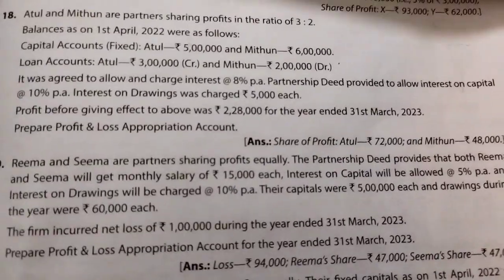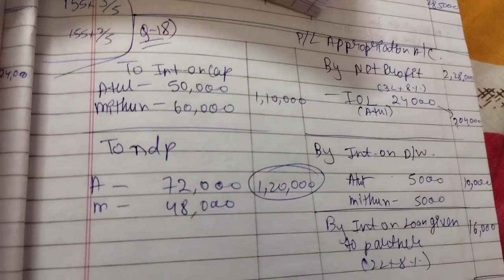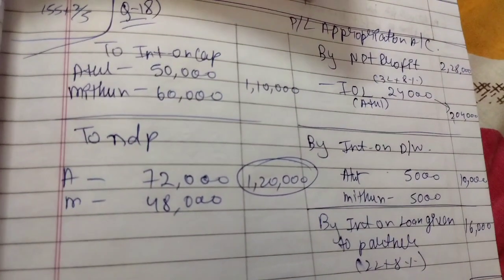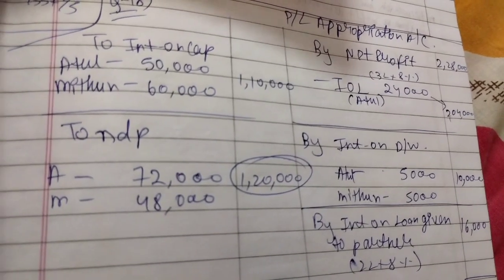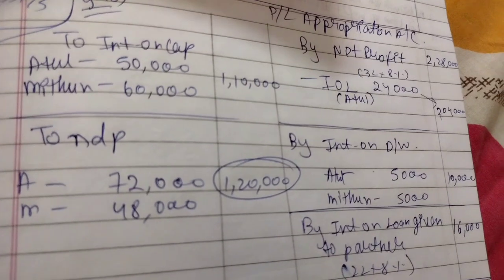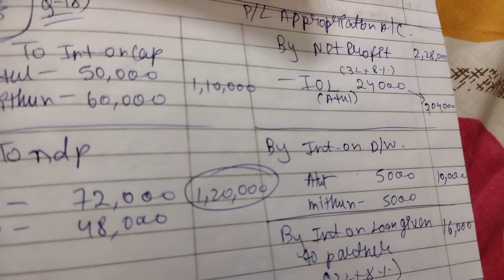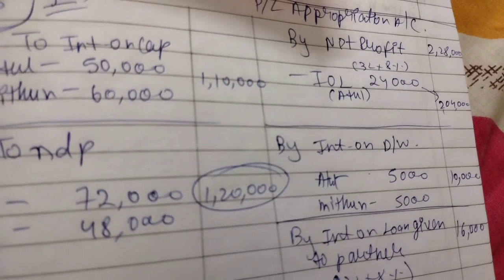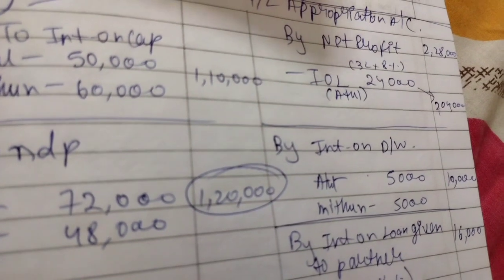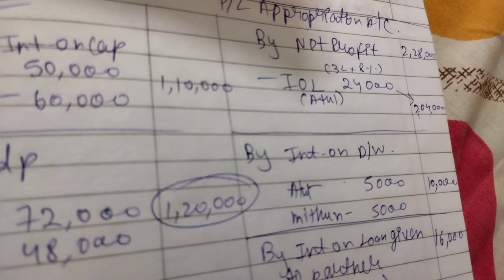We need to calculate interest on capital (IOC). The rate was 10%, so Atul's IOC is 50,000 and Midhun's is 60,000 — outer column total is 1 lakh 10,000. Net profit was 2 lakh 28,000. For interest on loan: Atul's loan is 3 lakh at 8%, which gives 24,000. We will subtract this from the net profit.